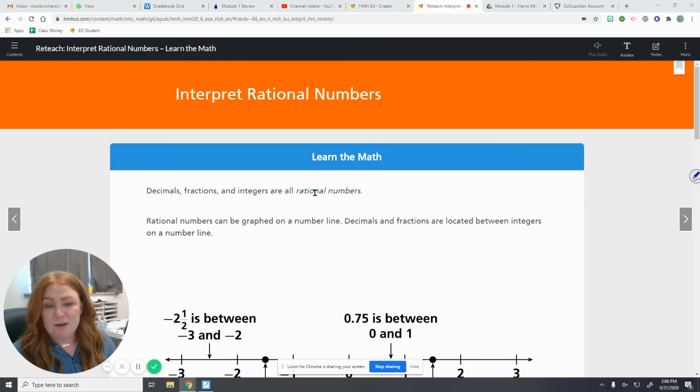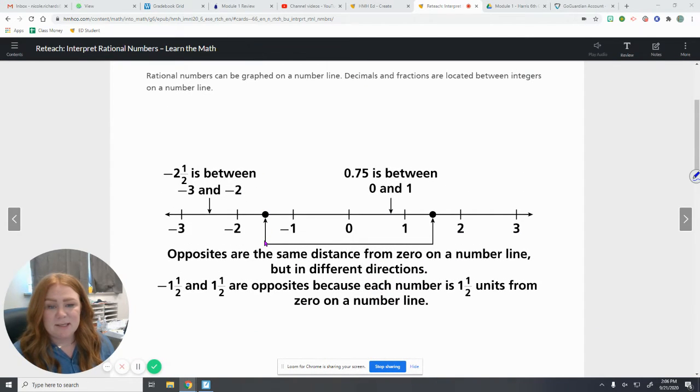We're going to be looking at rational numbers again. That's decimals, fractions, and all integers, all whole numbers. We're going to look at graphing them on a number line. One thing we want to remember is that opposites are the same distance from 0, but they're in different directions. One's positive, one's negative.